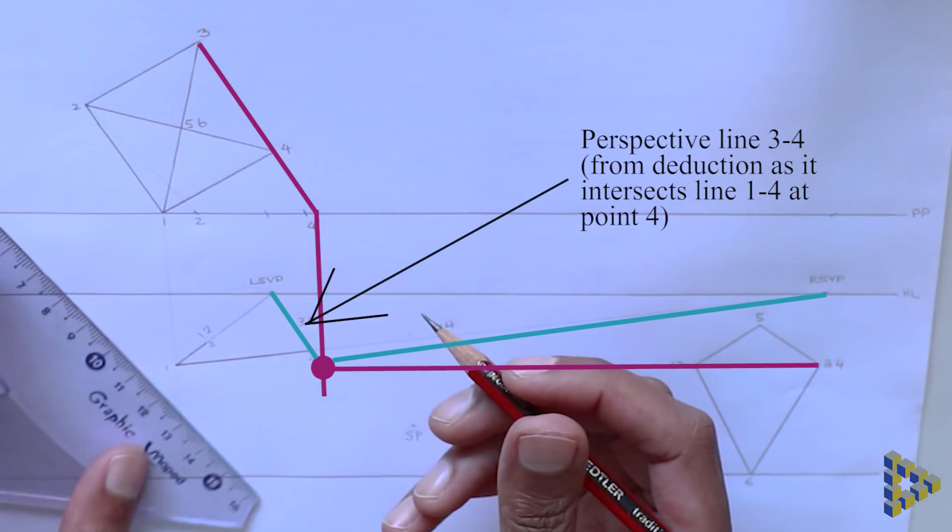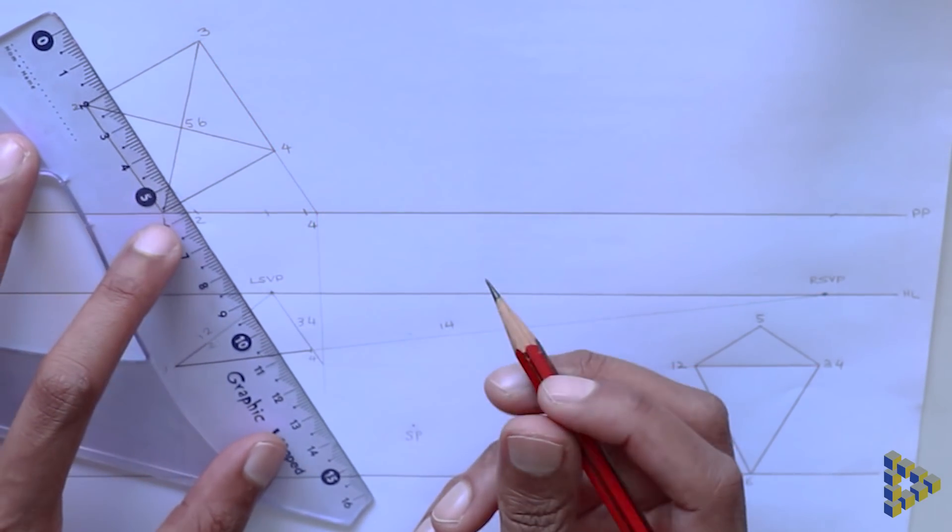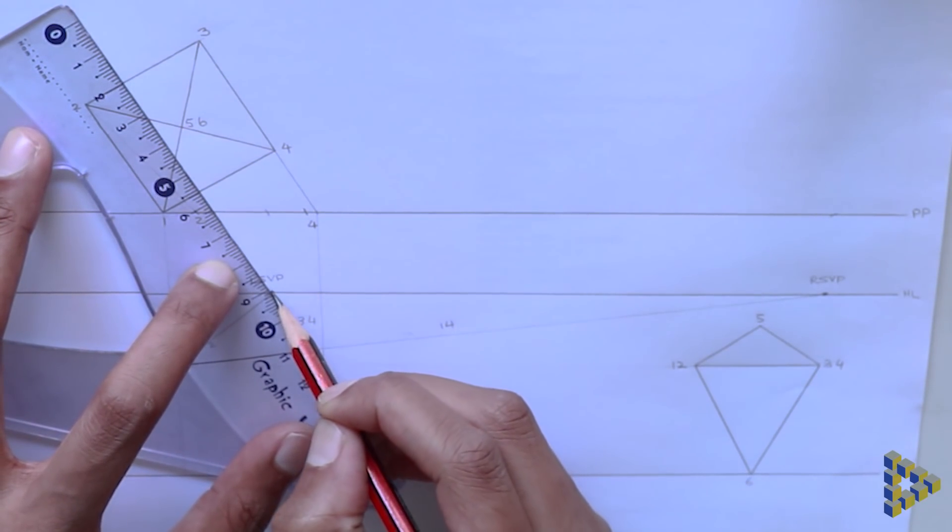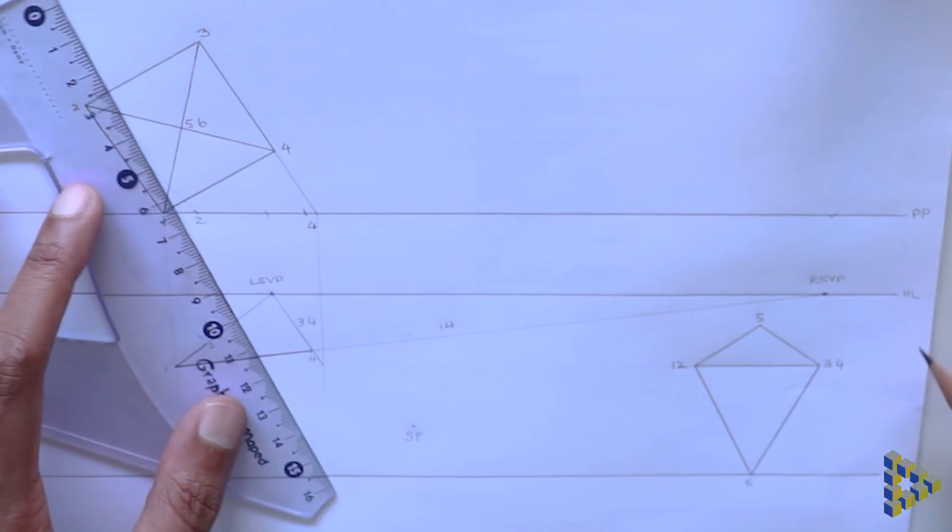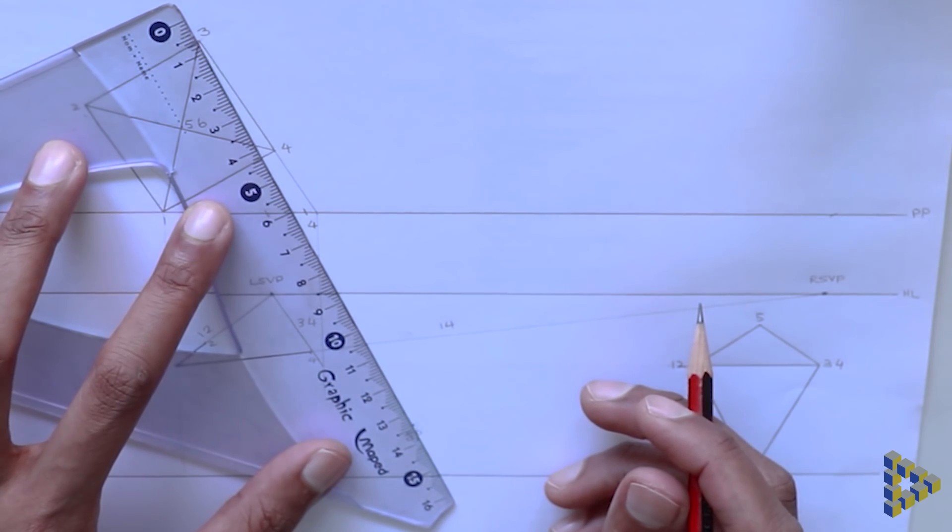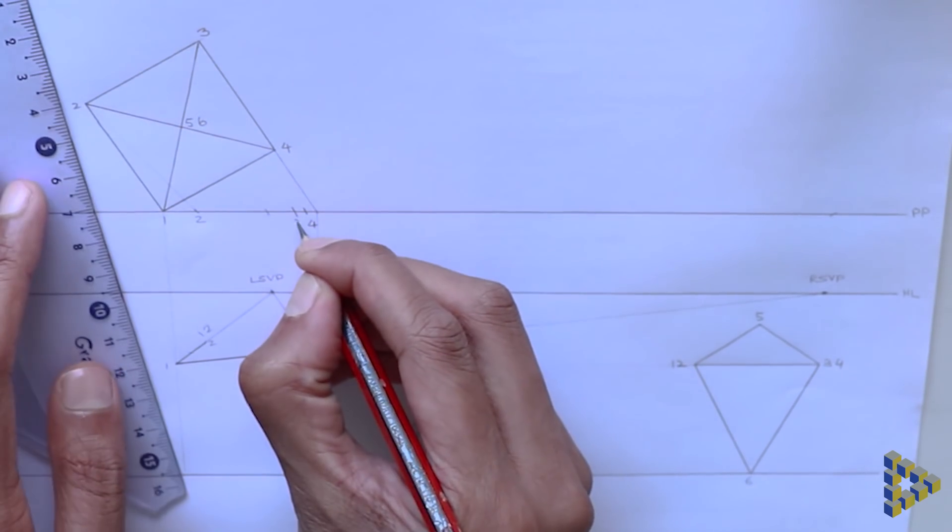Check that your procedure is correct as perspective line one, four should intersect perspective line three, four at point four. Now bring down point three onto the perspective line three, four.